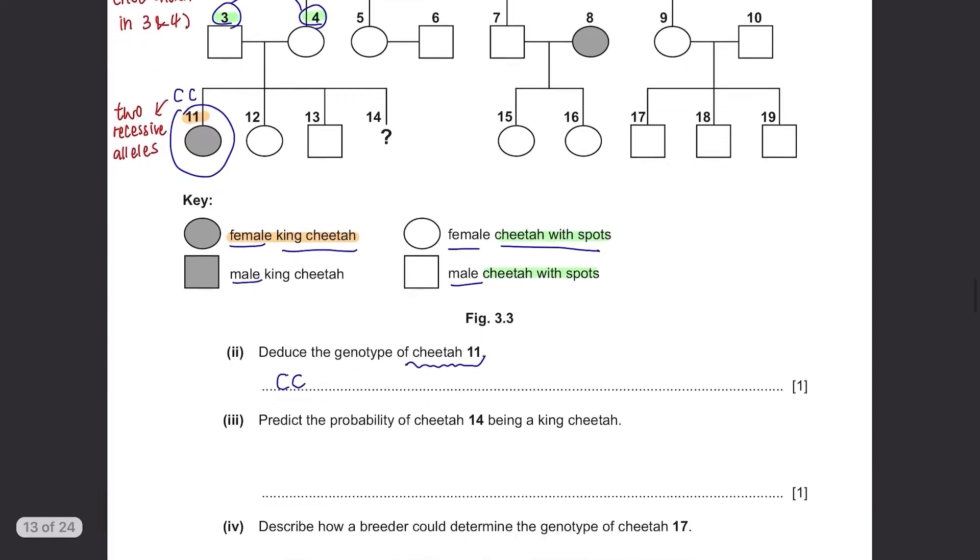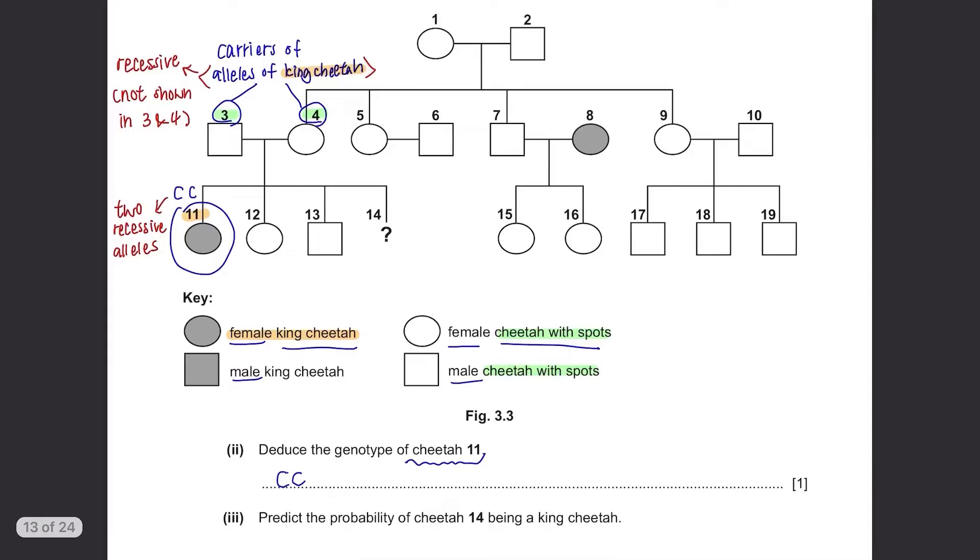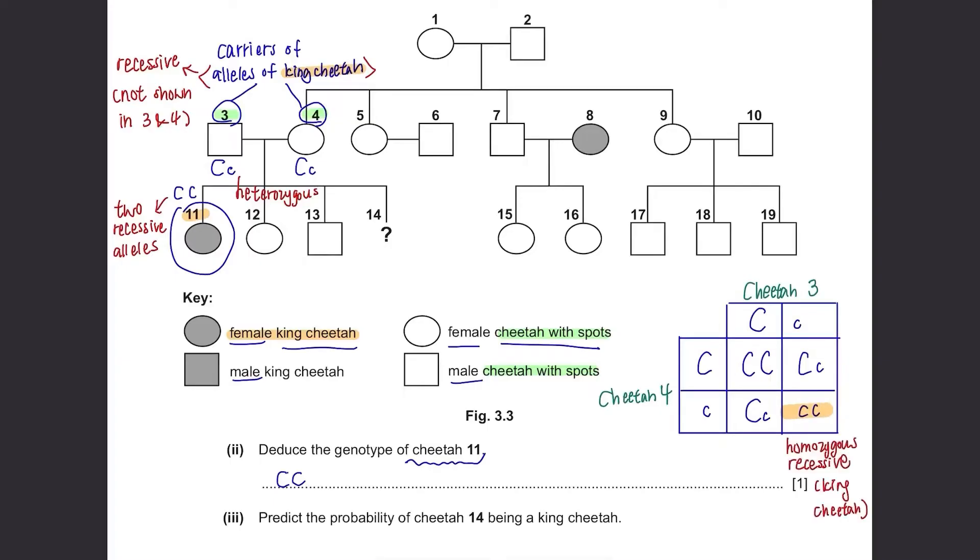Predict the probability of cheetah 14 being a king cheetah. Now we know that cheetahs 3 and 4 are carriers of alleles of king cheetah, small c and their genotypes are Cc. So, if two heterozygous species produce an offspring, there is a 25% chance of producing a homozygous recessive species.